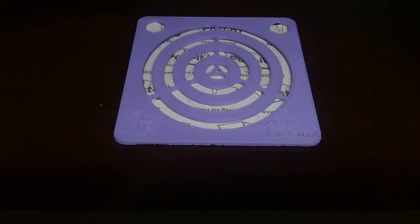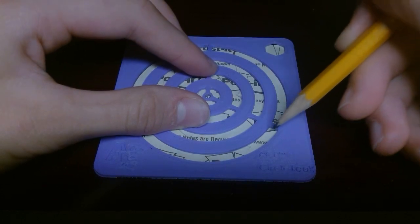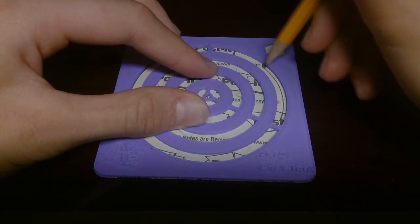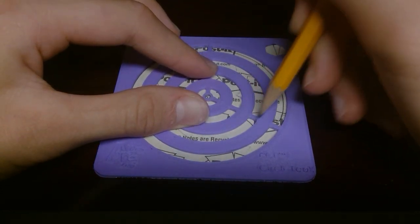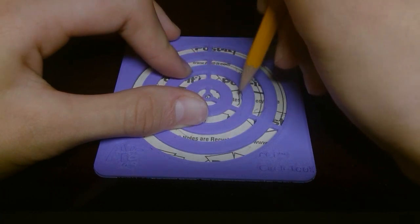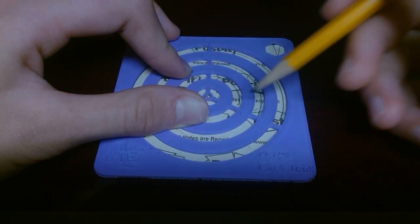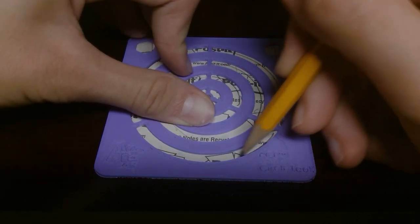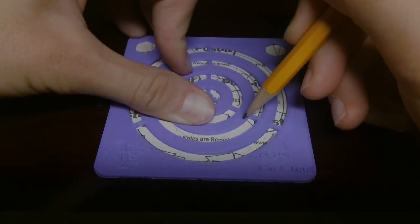And then we'll trace whatever circle you want. You could do this circle, you can do that circle, you can do all of them if you want. And then trace the other side.